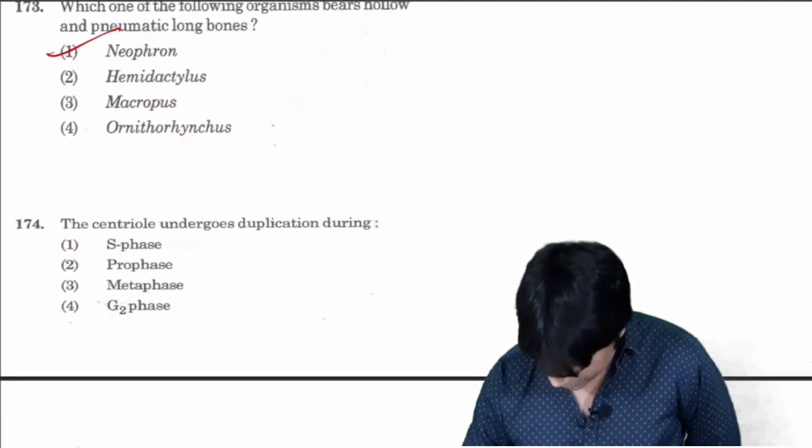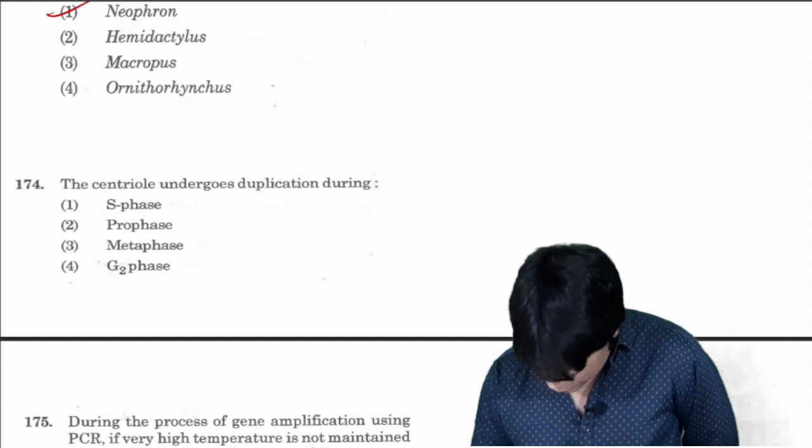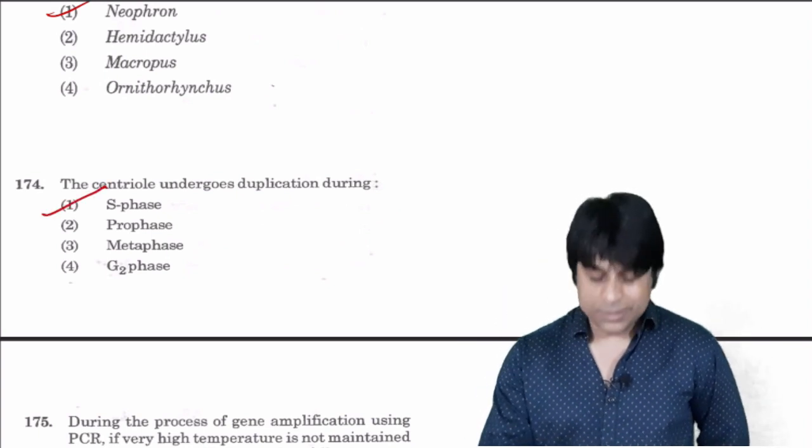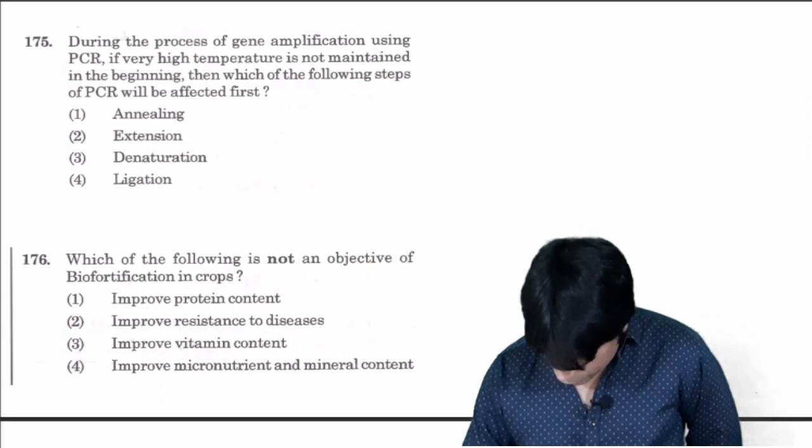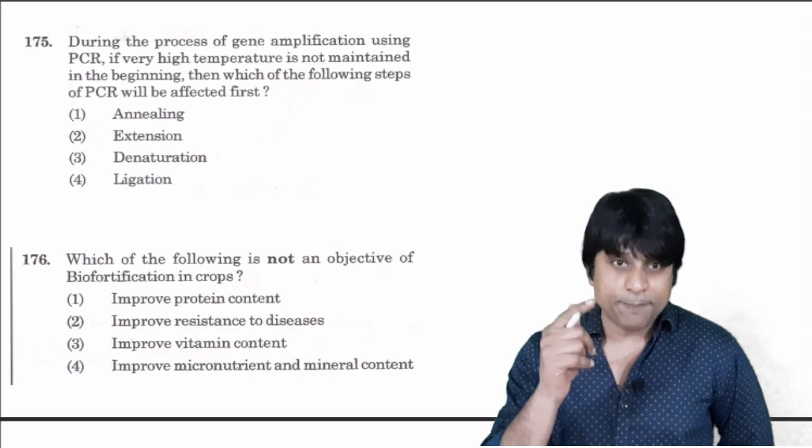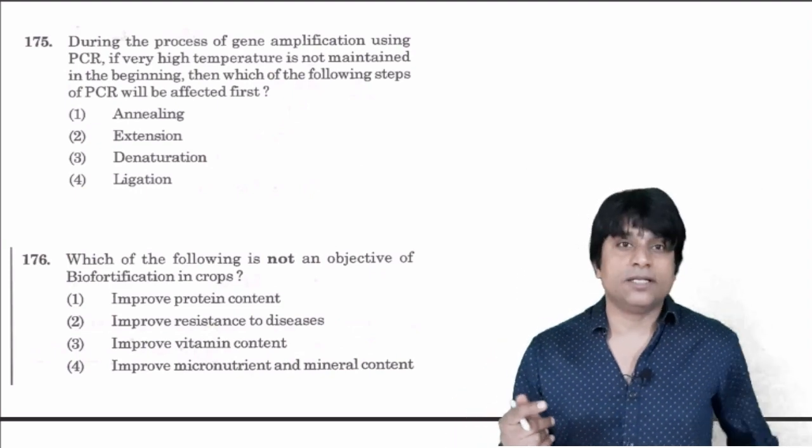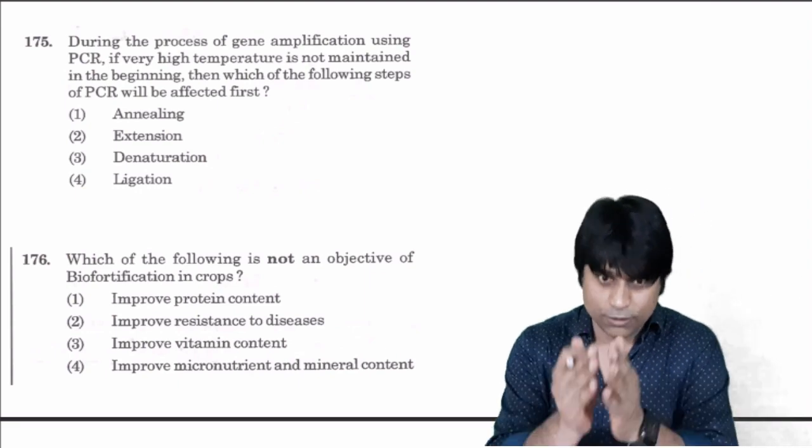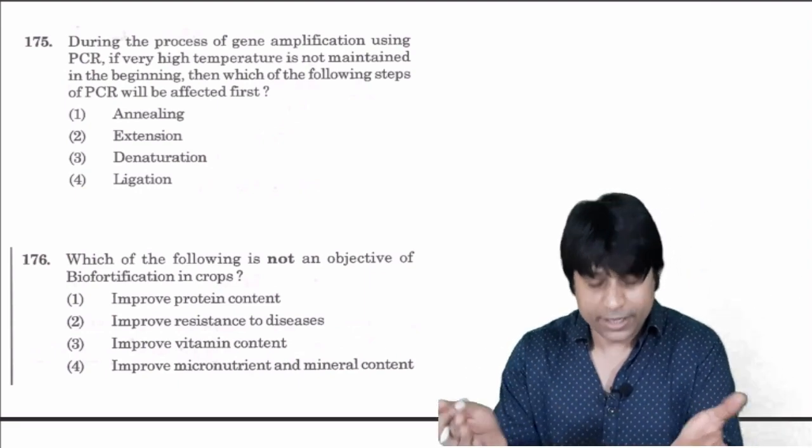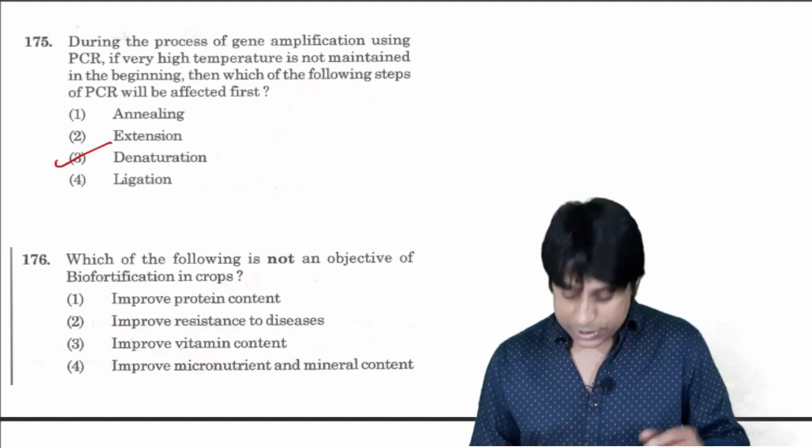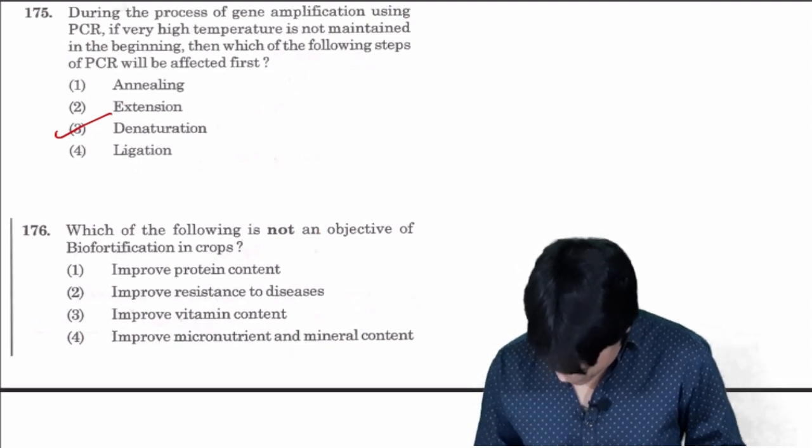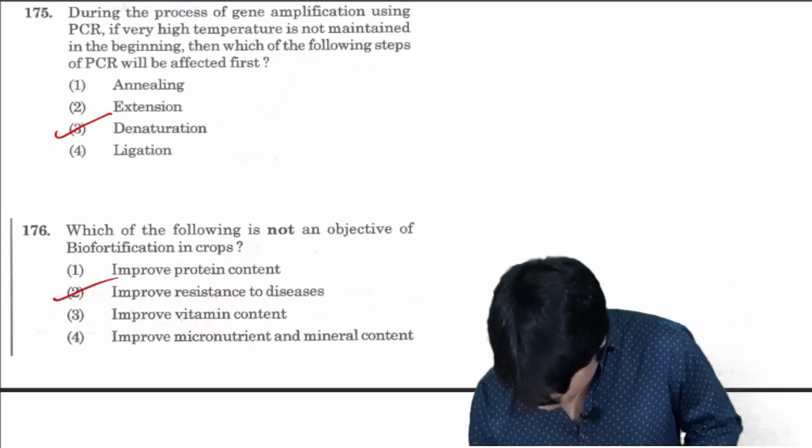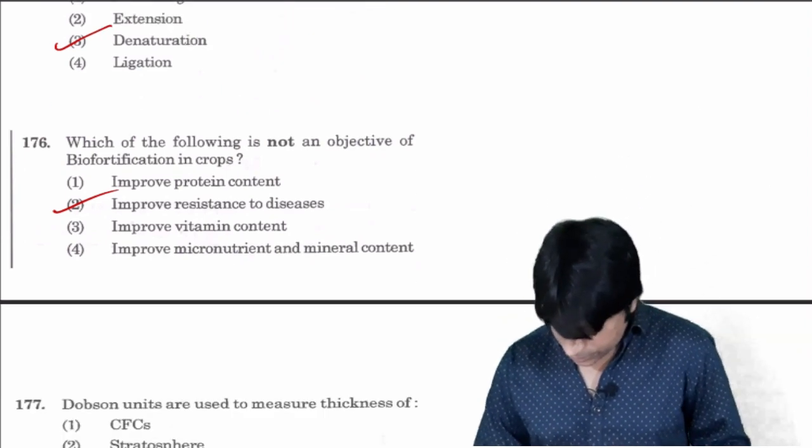Centriole undergoes duplication during S phase. During the process of gene amplification using PCR, very high temperature is maintained in the beginning. Which of the following steps? The three steps are denaturation, annealing, extension. In the denaturation, temperature is very high around 94 degrees so two strands of the DNA will be separated. Answer is three. Which of the following is not an objective of biofortification? It is not to develop resistance against disease, it is two.